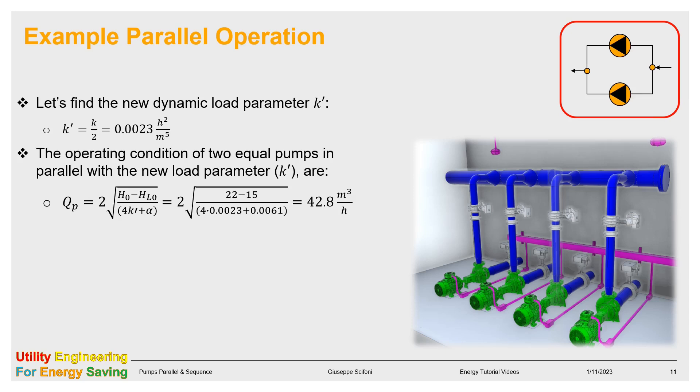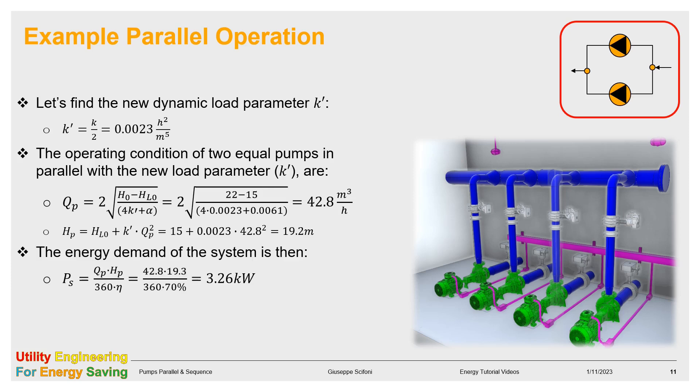The flow of the parallel we can find soon by using the formula seen at slide number 5. We get QP equals 42.8 cubic meter per hour. Similarly, as per the sequence operation, we get the head HP that turns into 19.2 meter. The energy demand is now 3.26 kilowatt.